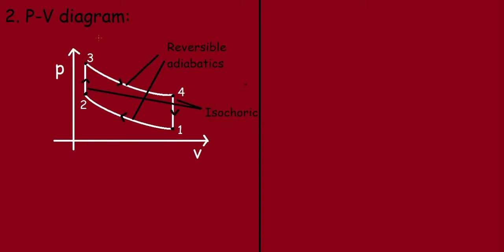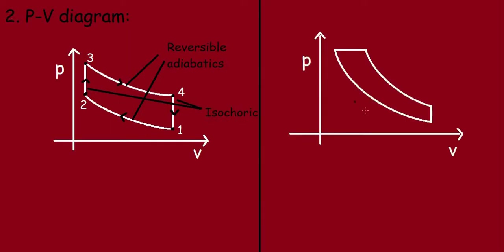This is the PV diagram for the diesel cycle, with points labeled 1, 2, 3, and 4. Unlike the Otto cycle, the diesel cycle has two reversible adiabatics, one isochore, and one isobar. The process from 2 to 3 is isobaric (constant pressure), and from 1 to 4 is isochoric (constant volume).